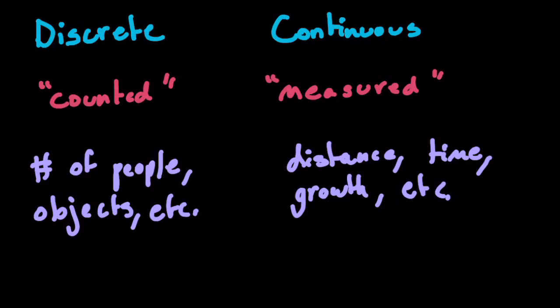Now, next thing are some examples. So discrete data, you're going to have the number of people again. One, two, three, four, five, six, so on and so forth. Easy to count. Objects, etc.